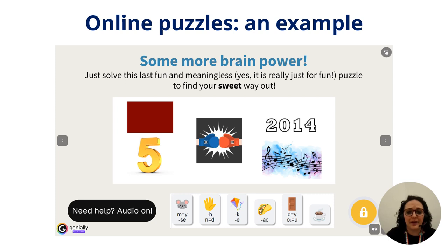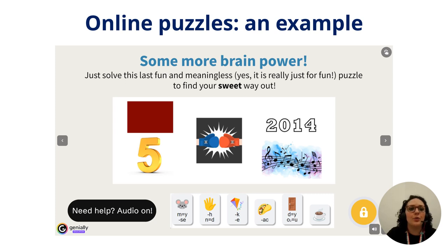If you don't want to prepare hints in advance, what you can do — and what I often do — is offer students a certain number of lifelines. So I tell them, for example, that they can ask me for help on two occasions throughout the escape room. Where possible, something that I always try to include is a 'talk to me' or 'time to talk' puzzle. I usually set this halfway through the escape room and it is usually designed around a case study or a problem-solving question.